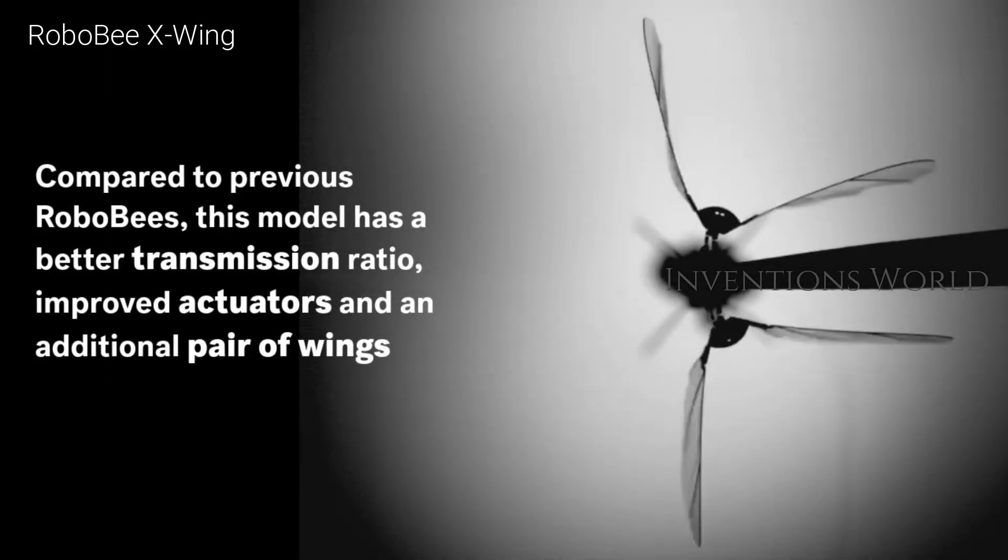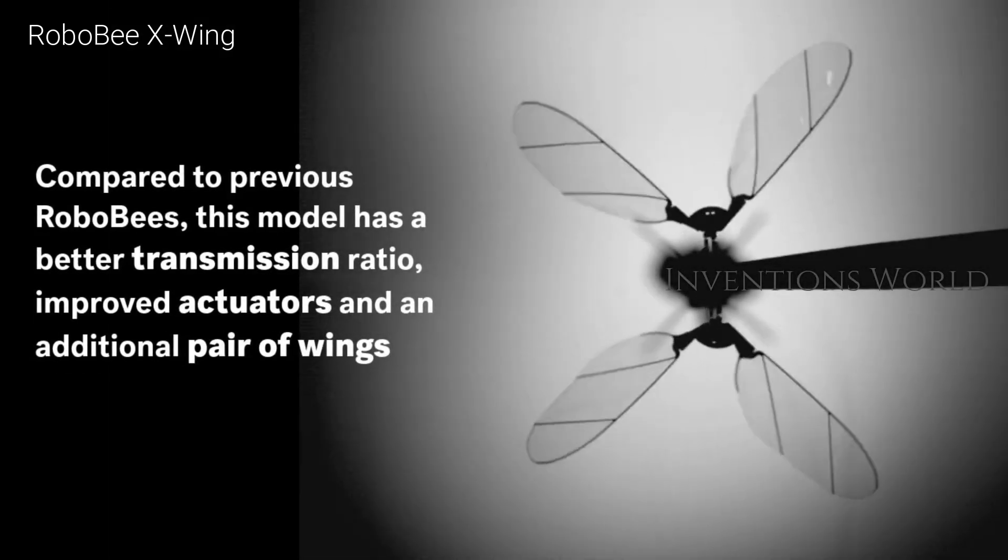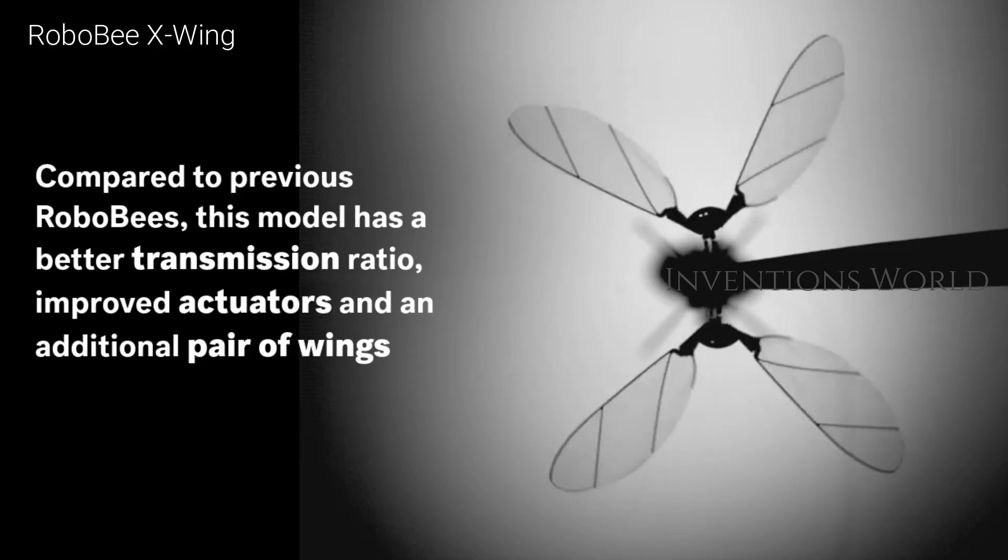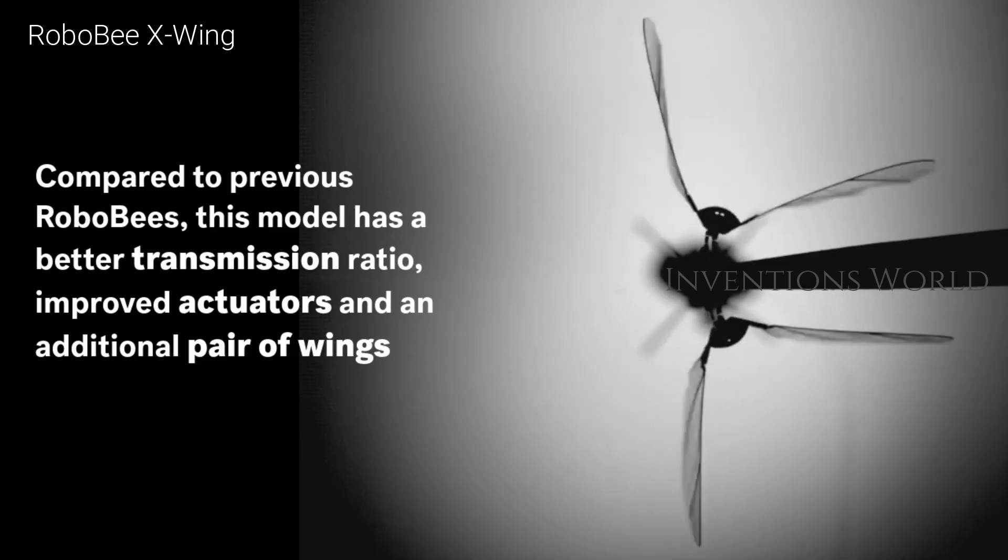In future versions, the team hopes to enable the robot to fly in sunlight and incorporate sensing mechanisms so it can then really control what it's doing when it's flying around.